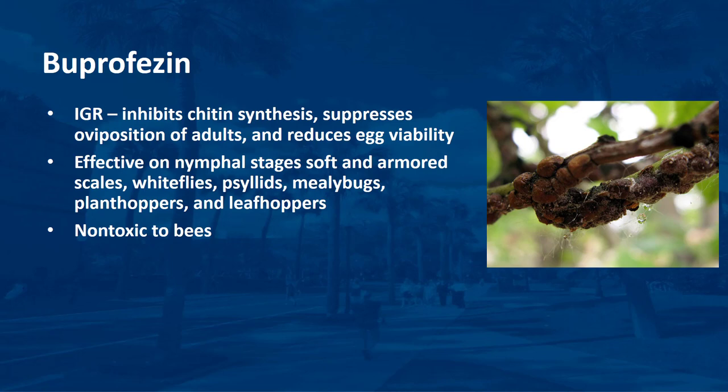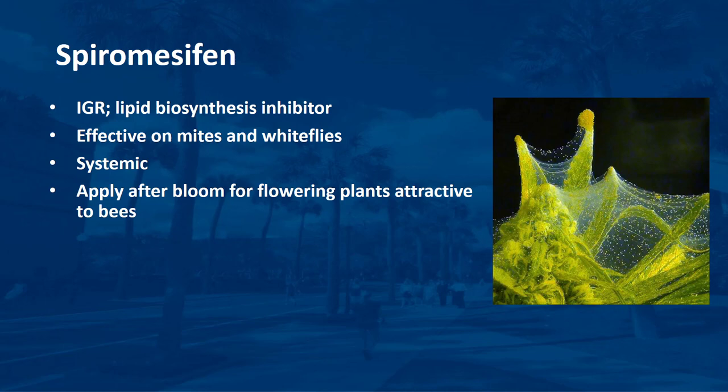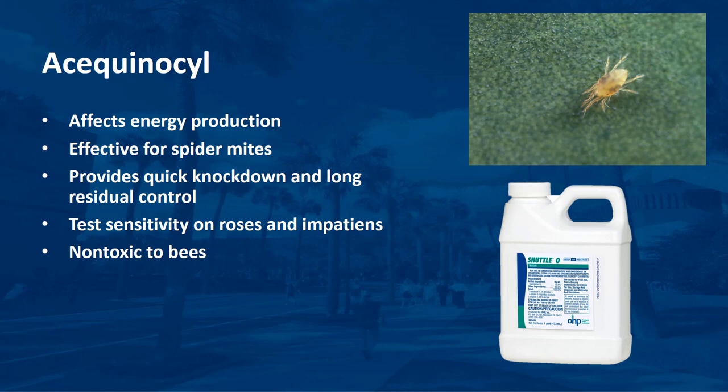Spiromesifen is a mite IGR labeled as an EPA-reduced-risk chemical. It is a lipid biosynthesis inhibitor and targets all stages of a broad range of mite species and immature stages of whitefly species. The Forbid label states no precautions for bees, but there are concerns about the systemic nature of this product and the potential exposure of bee larvae to this class of insecticide. Due to this concern, spiromesifen should be applied after bloom for flowering plants attractive to bees. Acequinocyl is an EPA-reduced-risk miticide, a metabolic poison that kills spider mites by affecting energy production. It provides quick knockdown and long residual control. Plants should be tested for sensitivity, especially roses and impatiens. The Shadow label states no precautions for bees. Acequinocyl is considered non-toxic to bees and can be applied at any time. Since acequinocyl is selective for mites, other pollinators and natural enemies should not be affected.